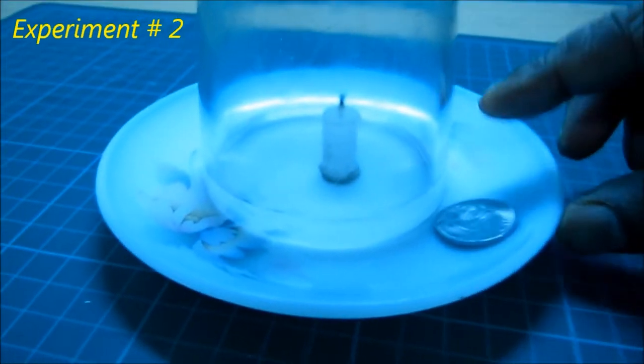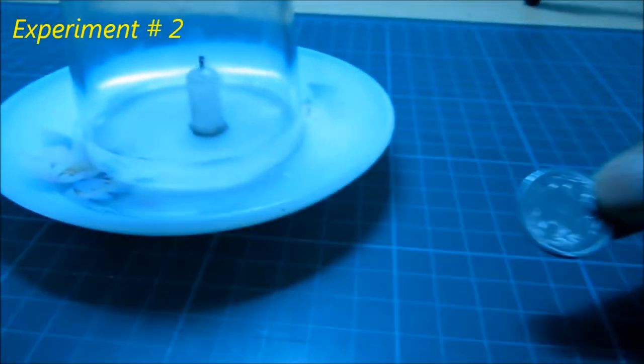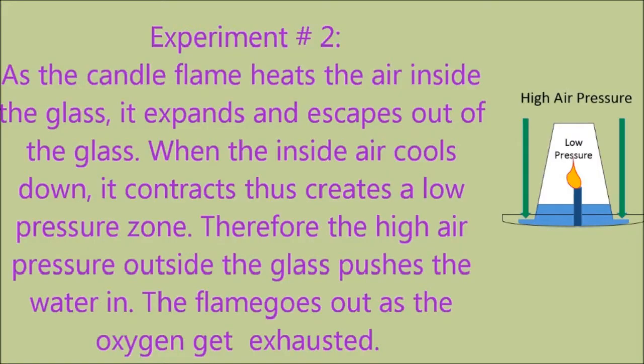Why? As the candle flame heats the air inside the glass, it expands and escapes out of the glass. When inside air cools down, it contracts, thus creating a low-pressure zone. Therefore, the high pressure outside the glass pushes the water in. The flame goes out as the oxygen gets exhausted.